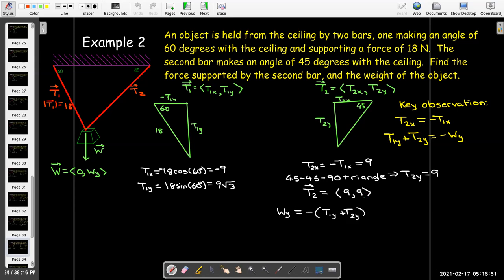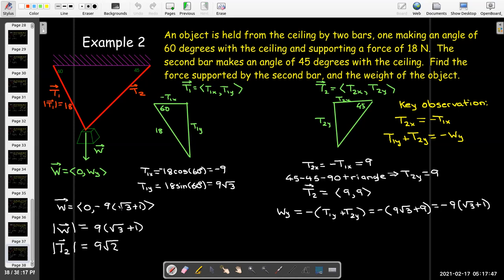Now, what about the weight? Well, the weight would have to be the negative of whatever those bars are pulling up, and their combined forces pulling in the vertical direction. And so, that tells me that this vertical component in the weight vector has to be negative because it's pulling down. And so, it's going to be negative 9, parentheses, radical 3 plus 1. So, we know the components of the weight vector. How much does the object weigh? Well, the absolute value of the vertical component should be 9, parentheses, radical 3 plus 1. And we know what the components of the force vector is in T2. Its magnitude, then, would be 9 radical 2 newtons.